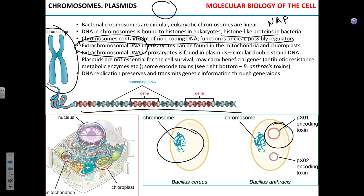Plasmids may carry genes for enzymes that give a microbe resistance to certain antibiotics, or genes for enzymes that produce essential nutrients. And in many cases plasmids encode so-called virulence factors. For example, in Bacillus anthracis, the causative agent of anthrax, one plasmid encodes the anthrax toxin, and another plasmid carries genes that encode the capsule.